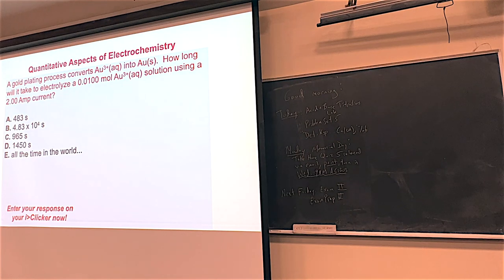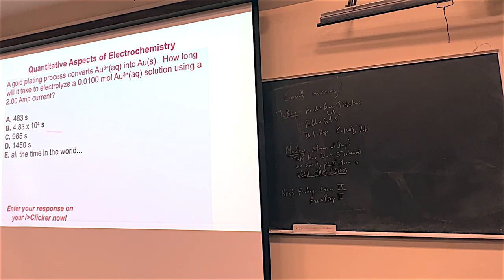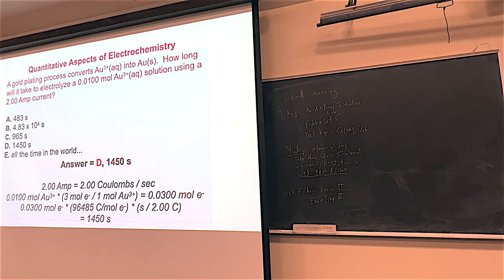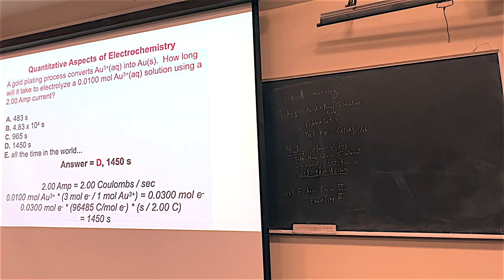In this problem, we have 0.0100 moles of gold 3+. We're using a specific current — just cross out the amps or A and write coulombs per second. We want to know how long it's going to take. Here's the moles: three moles of electrons per mole of gold 3+ converted gives this many moles of electrons. The Faraday constant — 96,485 coulombs per mole of electrons — times the moles of electrons gives coulombs. Dividing by coulombs per second (the amp) gives 1,450 seconds.